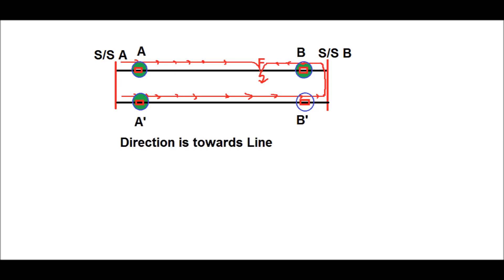Therefore, the directional feature is used towards the line — that is, if any fault occurs in between any section of the line, then only the relay will pick up. That is, the directional forward feature is used for sensing the fault in the transmission line.